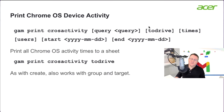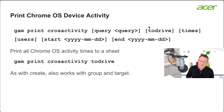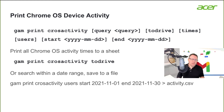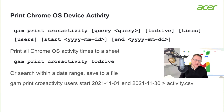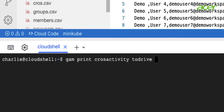The second command to look at is `gam print cros activity`. You can add a query, print results to Drive, show which users were using your devices and at what times, and specify a date range. If you just want a simple listing of all device activity saved to a sheet in Drive, you would run `gam print cros activity todrive`.